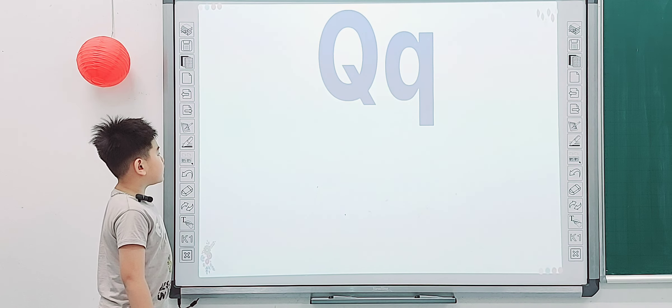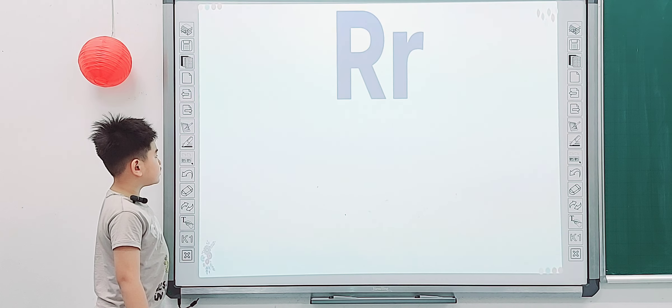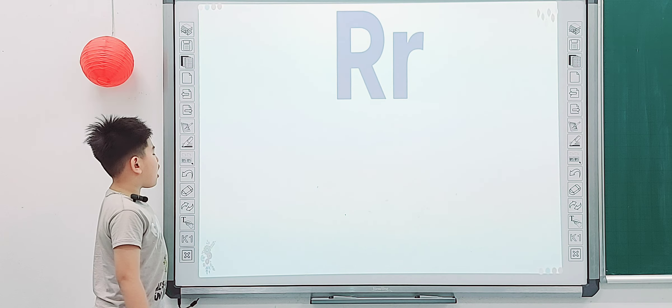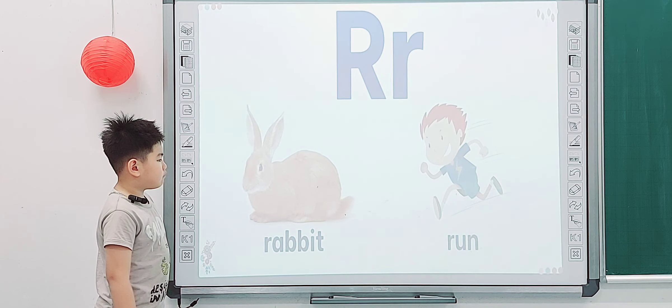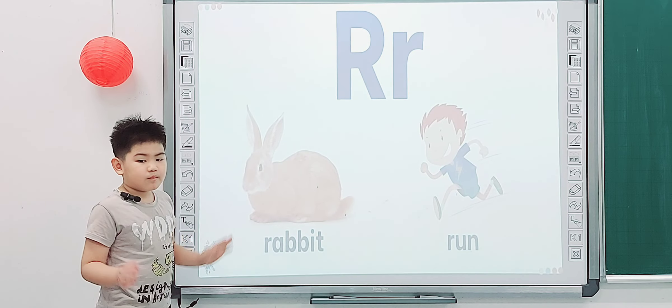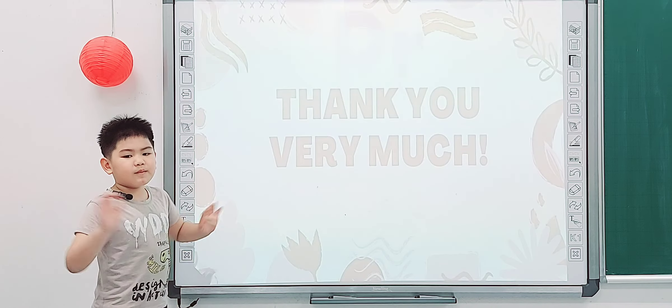We are getting this one. What is it? Q. Q is for? Queen. Question. And what is it? R. R is for? Rabbit. And? Ram. Ram. Yeah, okay, very good. Thank you.